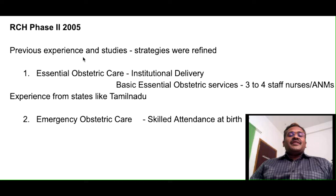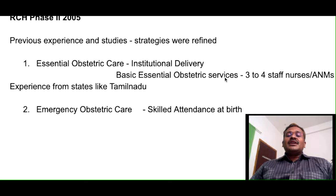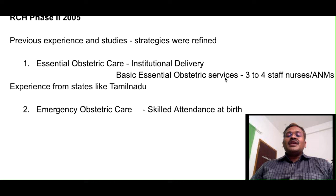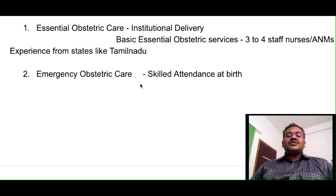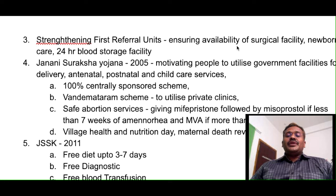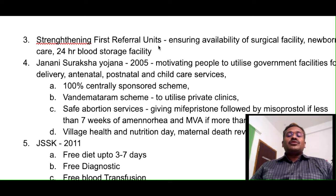In RCH phase 2, from previous experiences and studies, strategies were refined. Under essential obstetric care, institutional delivery was given more importance. Based on experience from Tamil Nadu, appointing 3 or more staff — more ANMs, more ASHAs — is more useful than giving cash to workers. Emergency obstetric care was strengthened by ensuring skilled attendance at birth, strengthening first referral units, and ensuring availability of surgical facility, newborn care, and 24-hour blood storage facility in first referral units. The first referral unit was properly defined under RCH phase 2.